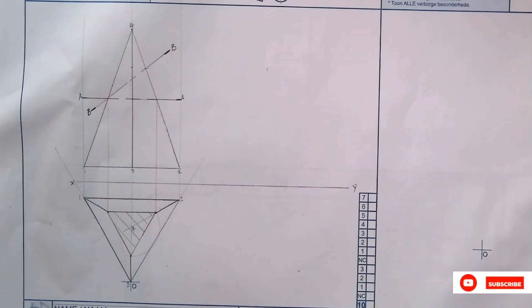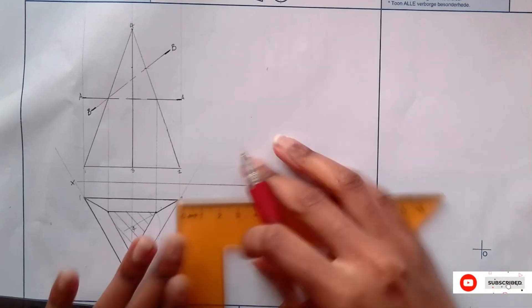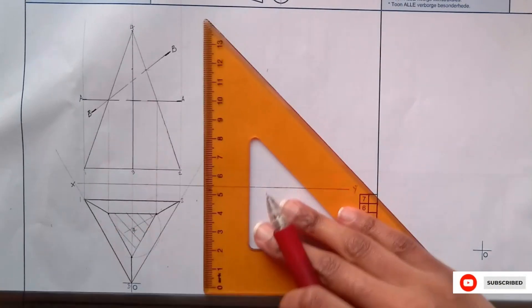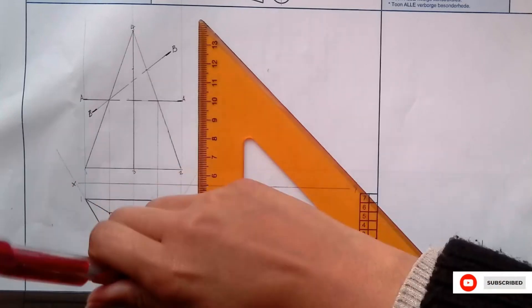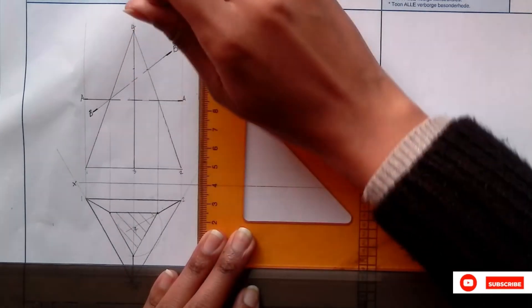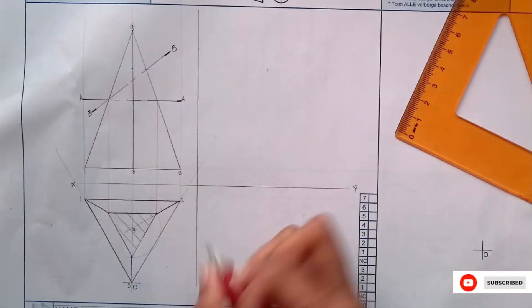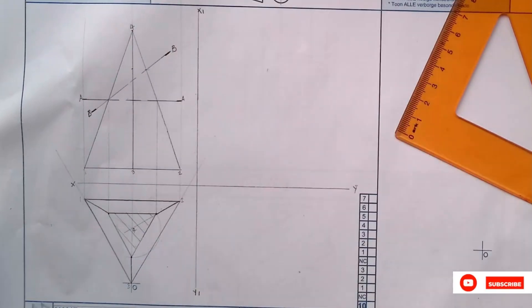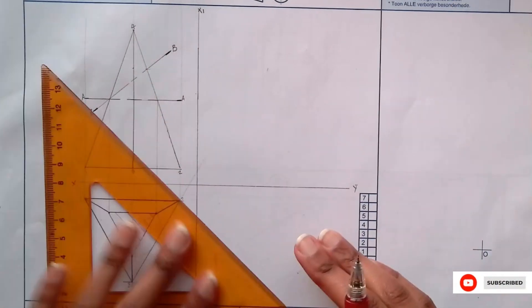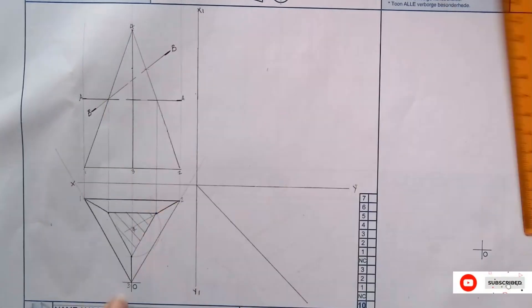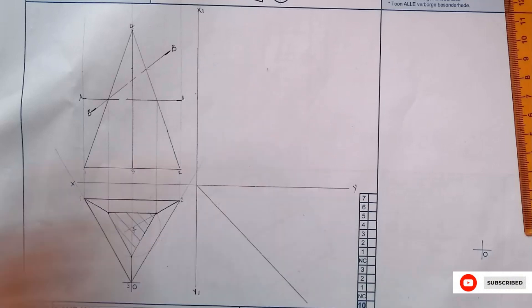There is your sectional top view. From here you're going to now draw your sectional left view. You measure 10 out, then draw your point, then draw your XY line. Pop out to a 45, then project your points to the 45 then up.